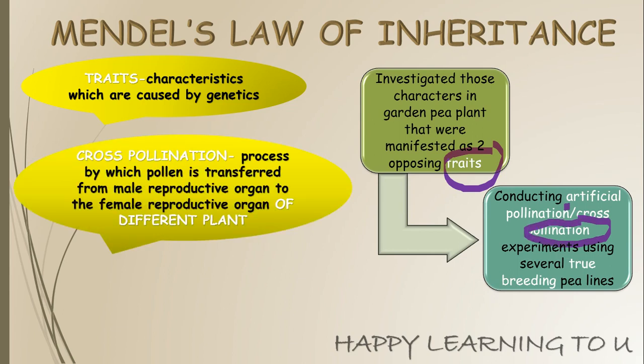First let me tell you what is pollination. Pollination is a process by which pollen is transferred from the male reproductive organ to the female reproductive organ. When this transfer occurs between two different plants, it is known as cross-pollination.